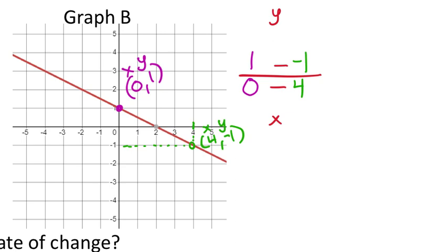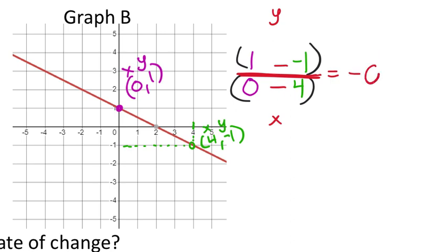I'll put this in the calculator with parentheses around the numerator and denominator. The fraction line is just the divide button. When you put this in the calculator, it will give you a slope or rate of change as a decimal—negative 0.5.